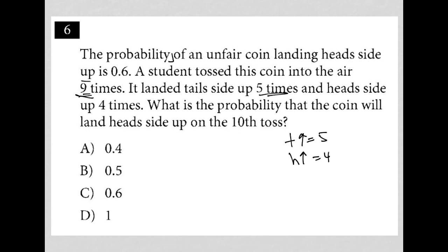This is a trick question. The question very clearly says the probability of an unfair coin landing head side up is 0.6. Guess what? But that probability has nothing to do with what happened in the toss prior to the coin toss that you are considering.